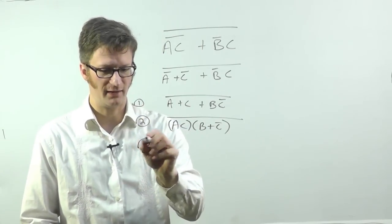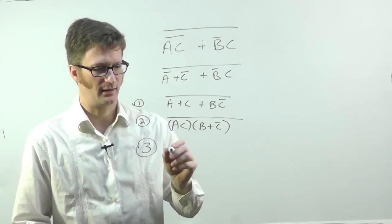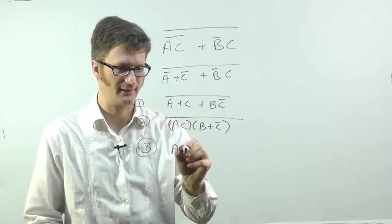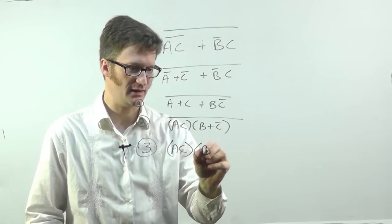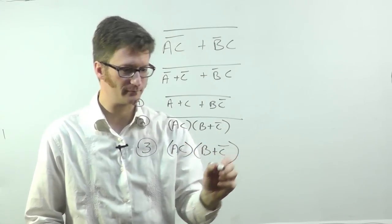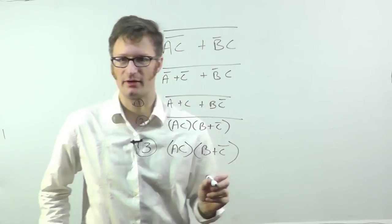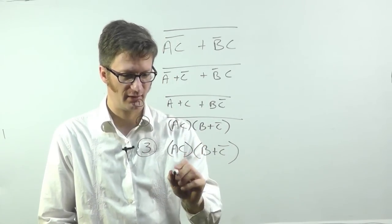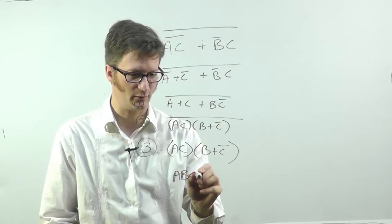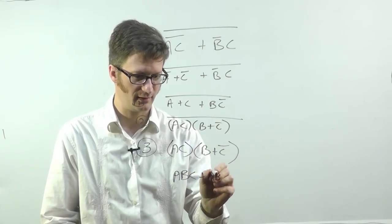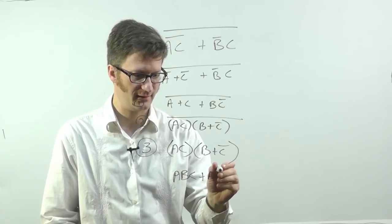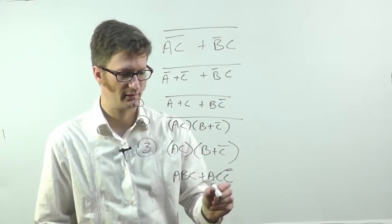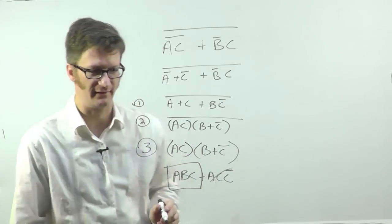All right. And then step three, we're going to invert the whole thing. So we get A, C, B, or C bar. Then we have a little bit more simplification left. We're going to distribute this. A, B, C, or A, C, C bar. And this one goes to zero. So the final answer is just A, B, C.